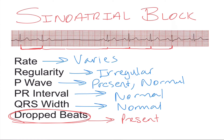That's one of the major characteristics of a sinoatrial block: you'll have a rate that varies with an irregular rhythm, everything else looks normal, but then you have these dropped beats between each QRS. If you've got all those things present, there's a pretty good chance you're looking at a sinoatrial block.